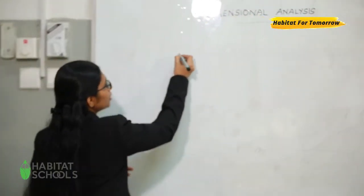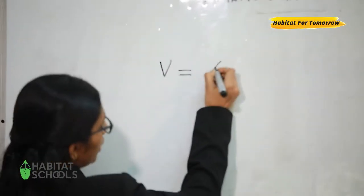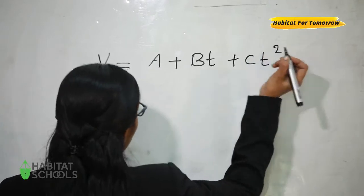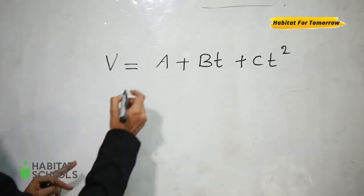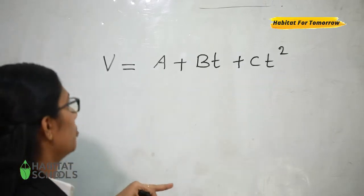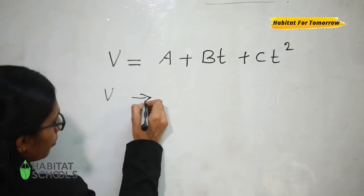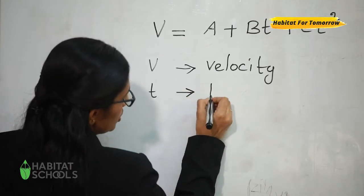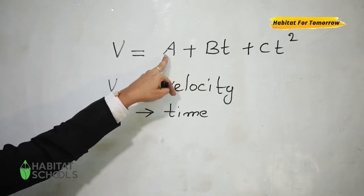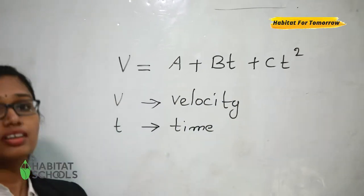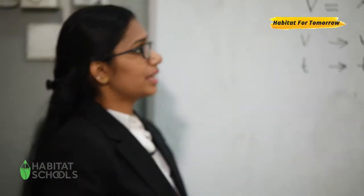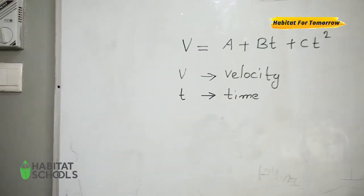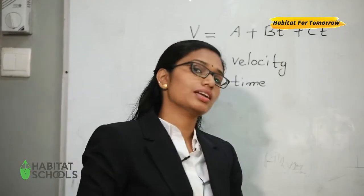suppose we have given an equation V is equal to A plus BT plus CT square. Where V is velocity and T is time. But in this equation, A, B and C are unknown quantities. And we are asked to calculate the dimension of these unknown quantities A, B and C as given in the equation.